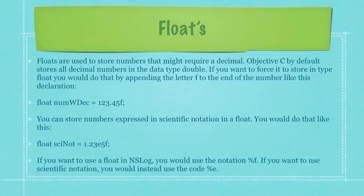Floats are used to store numbers that might require a decimal. Objective-C, by default, stores all decimal numbers in the data type named double, which I'm going to go over next. But if you want to force it to store in type float, you would do that by appending the letter F to the end of the number. You can store numbers expressed in scientific notation also in a float. And if you want to use a float in NSLog, you would use the notation percent sign followed by the letter F. If you want to use scientific notation, however, you would instead use the code percent sign followed by the letter E.